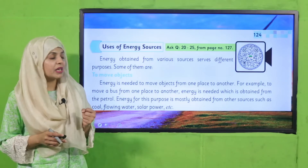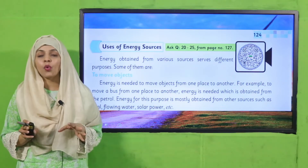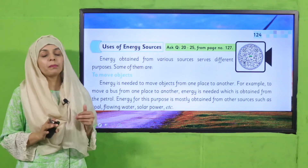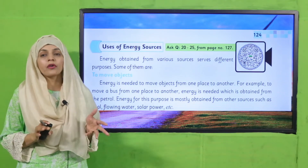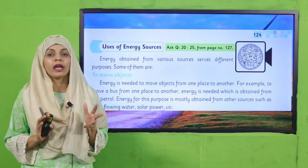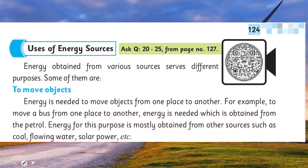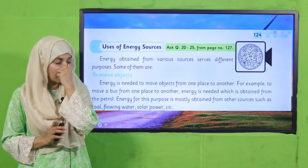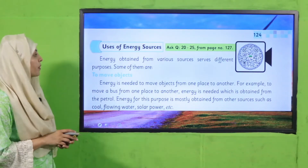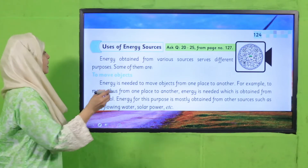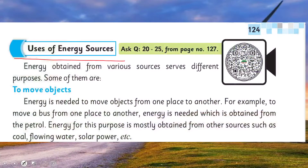Now is the time for reading. Please open page number 124 in your GK3 books. Let's start reading: Uses of Energy Sources. Energy obtained from various sources serves different purposes.